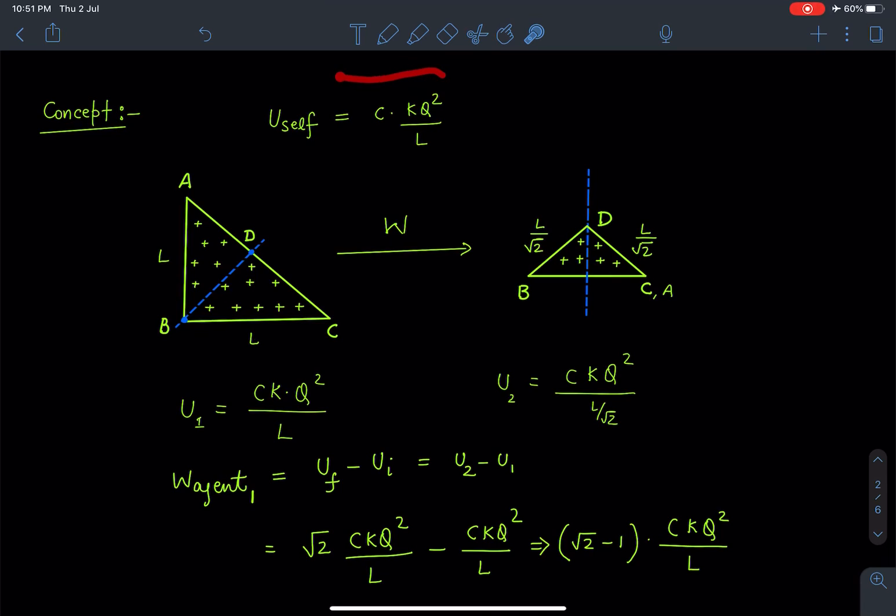That is going to be the dimensional formula where C is a constant which is a number. So that number depends on the geometry. If it was a shell we will have another number here, but it will be in terms of kq^2 by some distance parameter in this case. So let's proceed here.